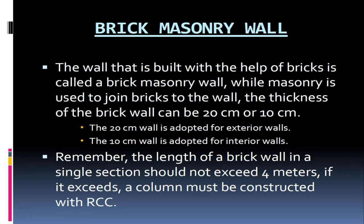Brick masonry wall. The wall that is built with the help of bricks is called a brick masonry wall, while masonry is used to join bricks to the wall. The thickness of the brick wall can be 20 cm or 10 cm. The 20 cm wall is adopted for exterior walls, and the 10 cm wall is adopted for interior walls. The length of a brick wall in a single section should not exceed 4 meters; if it exceeds, a column must be constructed with RCC.